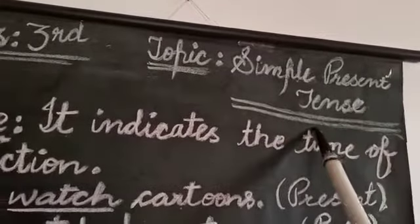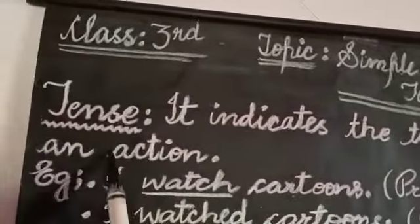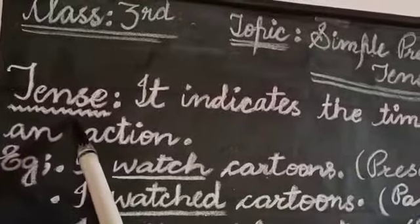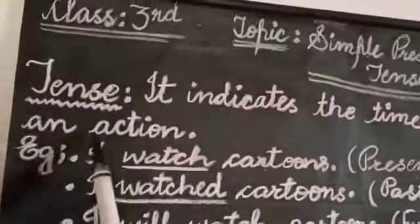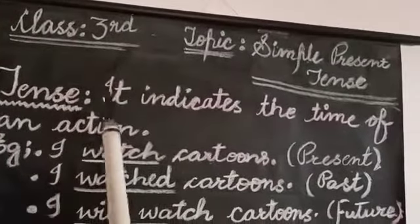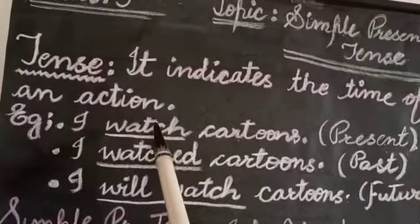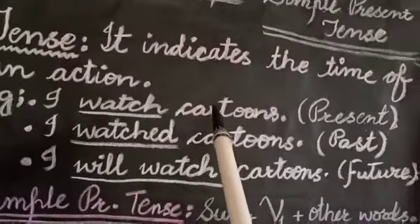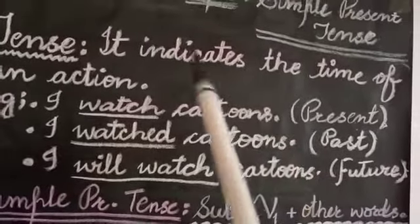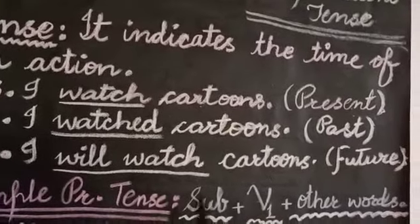Before going through simple present tense, you need to know what tense is or what tense means. It indicates the time of an action. If there is an action, it can happen in the present, it has happened in the past, or it may happen in the future. Past is the time which has gone, present is the time which is going on right now, and future is the time which is yet to come.